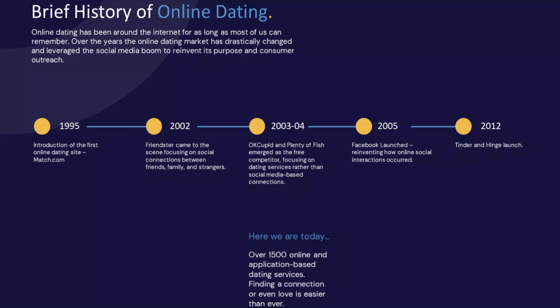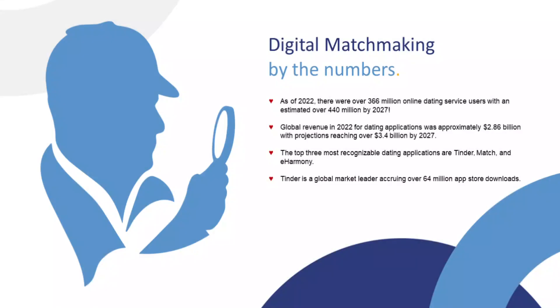From the emergence of Match.com in 1995, through the years to 2012 where we see the beginnings of the most popular applications today such as Hinge and Tinder — now looking at over 1,500 online and application-based dating services. Not only is finding a connection or even love easier than ever before, but the amount of digital forensic artifacts associated with these applications has grown exponentially.